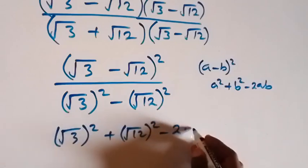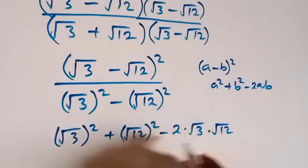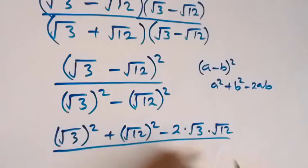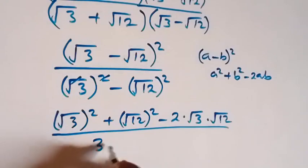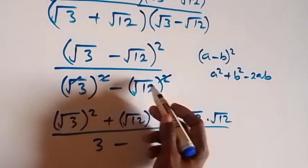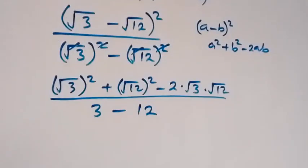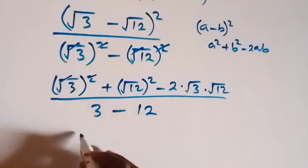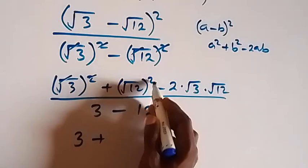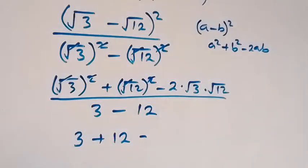Divided by, here square cancels the square root, we have 3 minus also square cancel square root, that's minus 12. Then from here as well, square cancels the square root, we have 3 plus also square cancel square root, that's plus 12, minus here we can write this as 2√36.